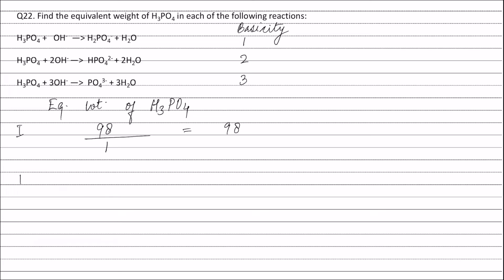In the second reaction, the equivalent weight of H3PO4 will be the molecular weight of H3PO4, that is 98, divided by the basicity of H3PO4, that is two, and this is equal to 49. In the third reaction, the equivalent weight of H3PO4 will be 98 divided by the basicity of H3PO4, that is 3, and this is equal to 32.67.